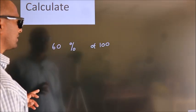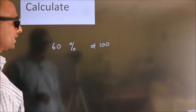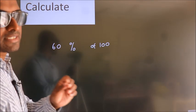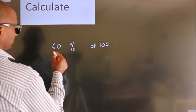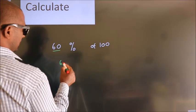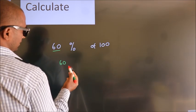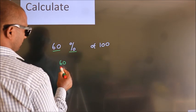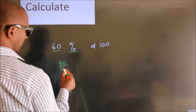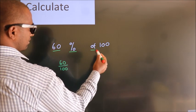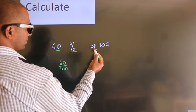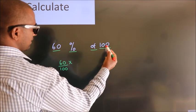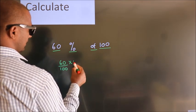Calculate 60% of 100. How do we calculate this? This number as it is we write. In place of the percentage sign, we divide by 100. In place of 'of' we write multiply. This number as it is.